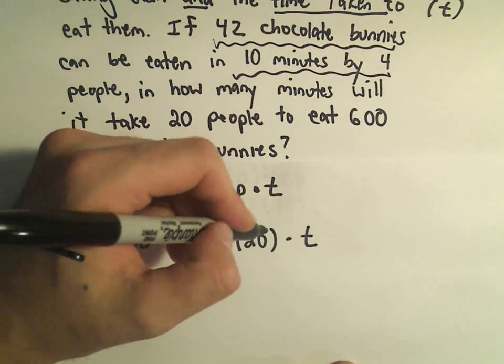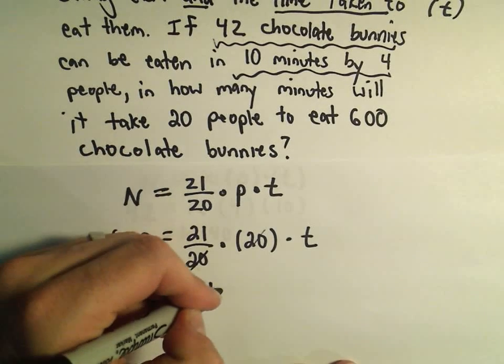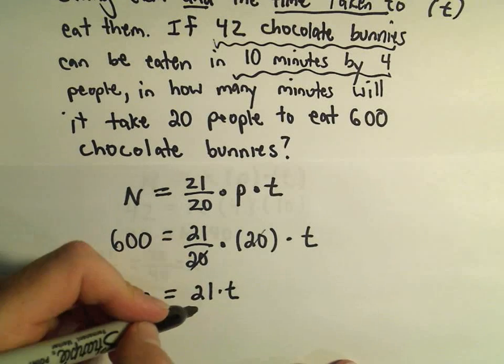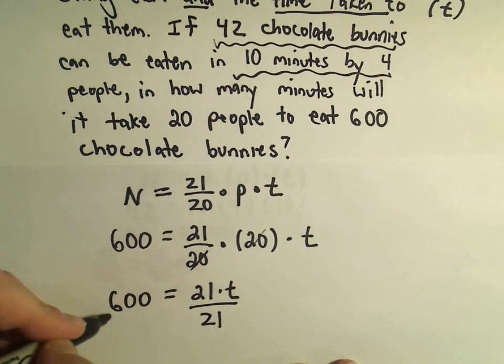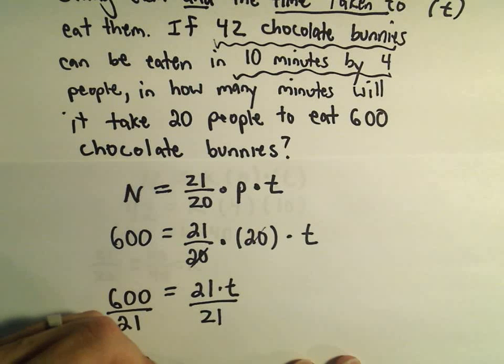So notice we could simply cancel out the 20s, and that would leave us with 600 equals 21 times T. And to solve for the time, we'll simply divide both sides by 21, and we'll get 600 over 21 minutes, because again, our units were in minutes.